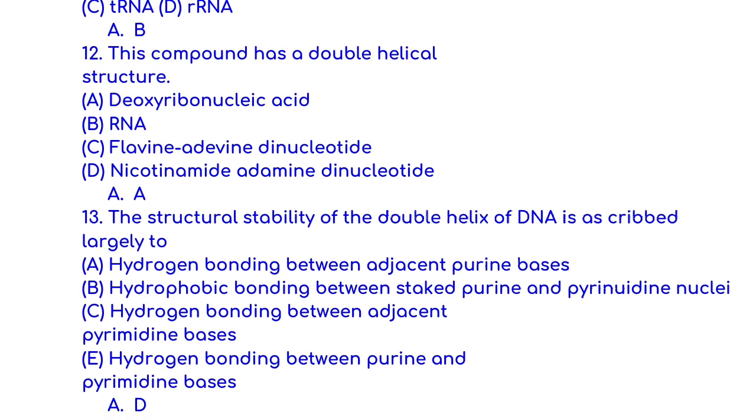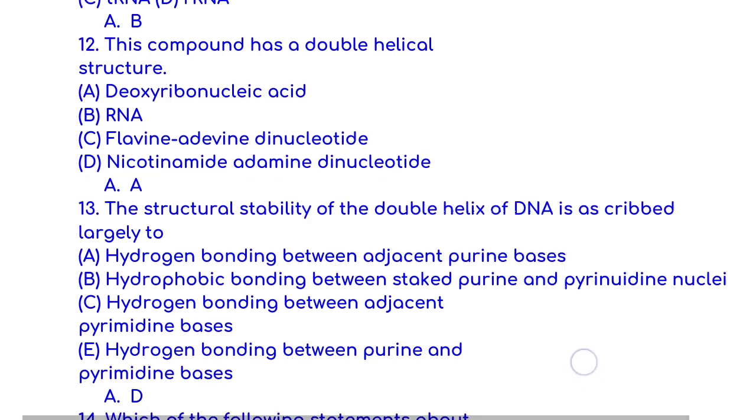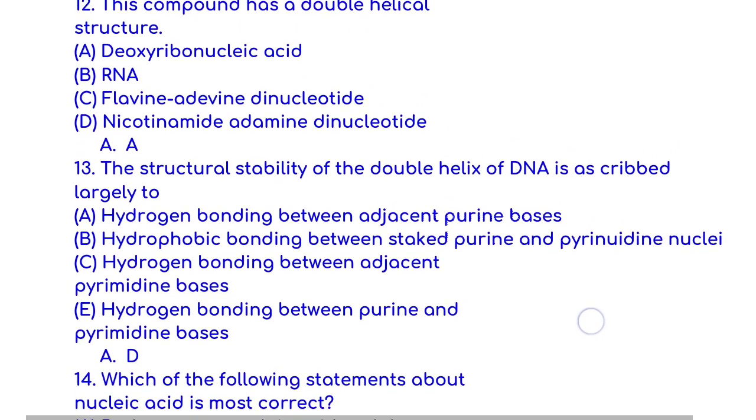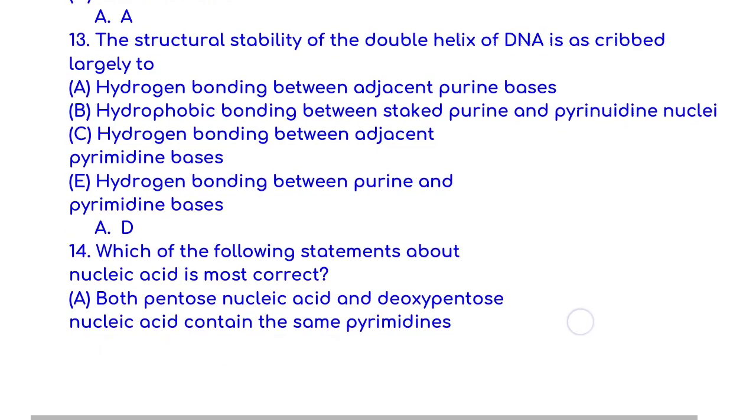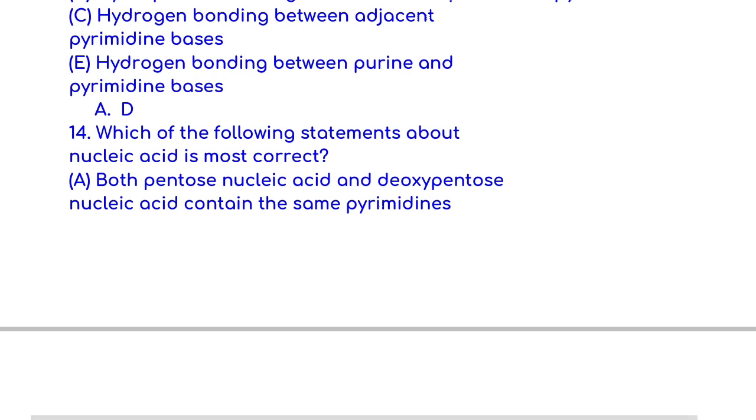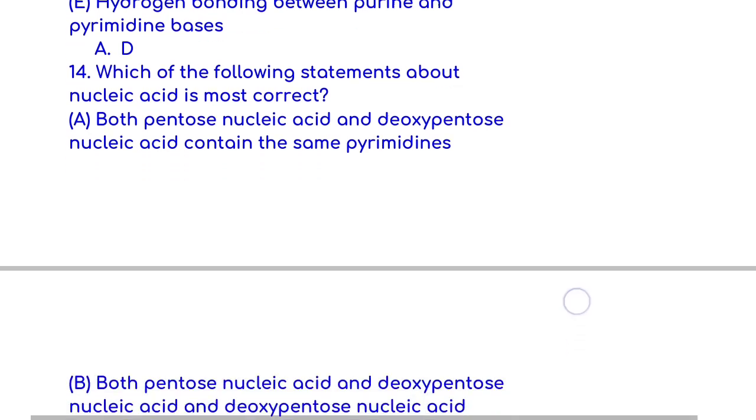This compound has a double helical structure: Deoxyribonucleic acid has a double helical structure. The structural stability of the double helix of DNA is ascribed largely to hydrogen bonding between purine and pyrimidine bases.